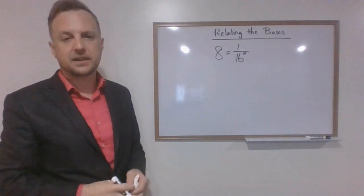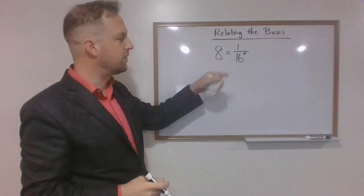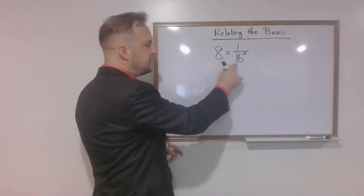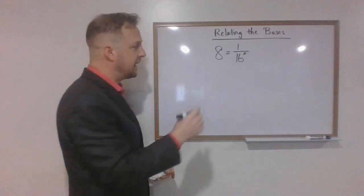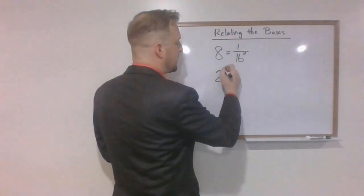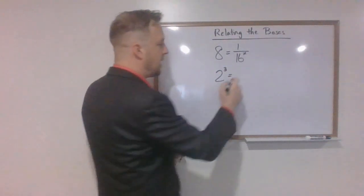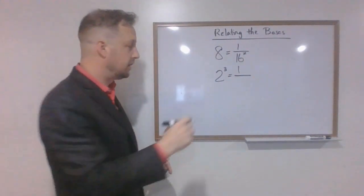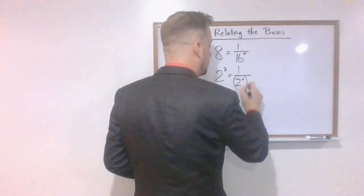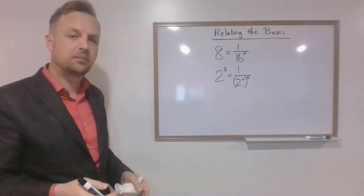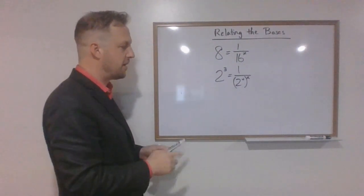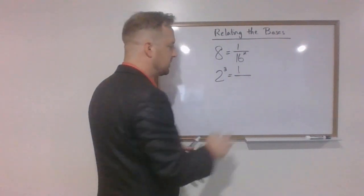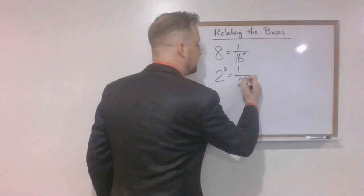Let's take a look at this first one. So we've got to solve for x. We've got 8 equals 1 over 16 to the x. So right now you should be telling yourself, okay, I can reduce these to similar bases, and hopefully you're thinking that the base of those is 2. So we can write this as 2 to the third, we can write this as 1 over 2 to the fourth.